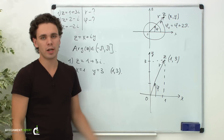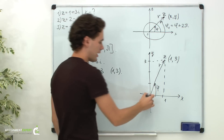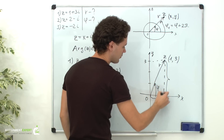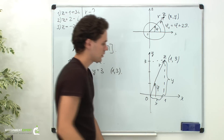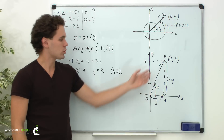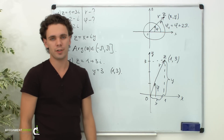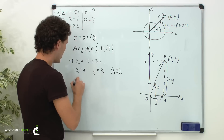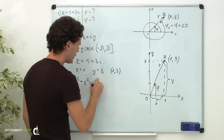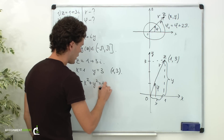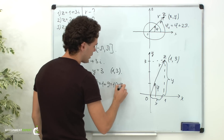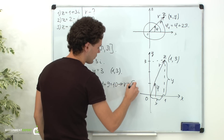As we can see, we obtain a right-angle triangle with legs x and y. From this triangle we can calculate modulus r using the Pythagorean theorem: r squared equals x squared plus y squared. In our case this is 1 plus 9, which equals 10, hence r equals the square root of 10.